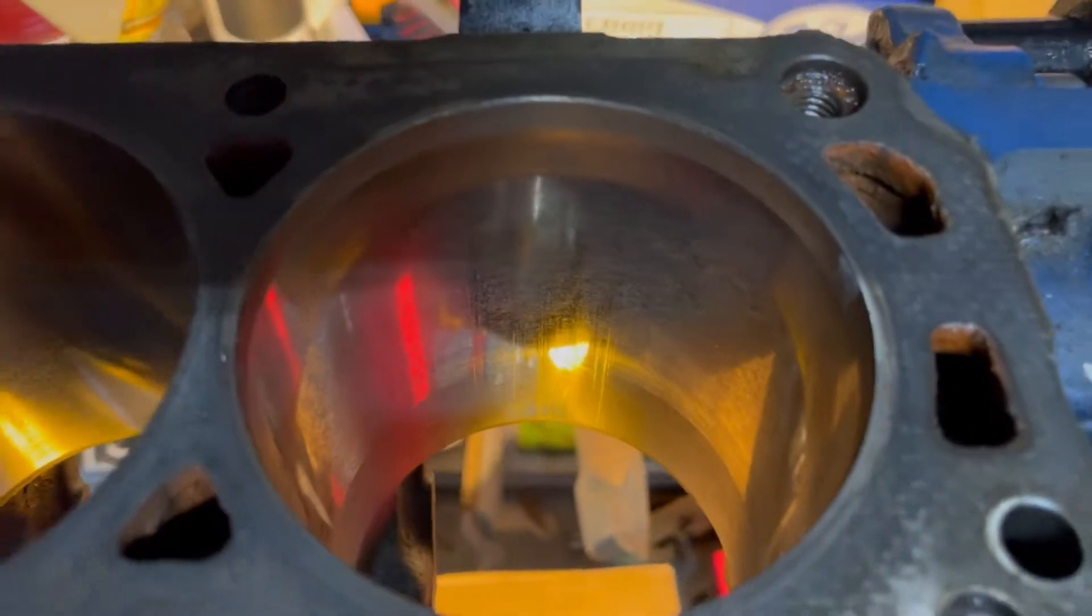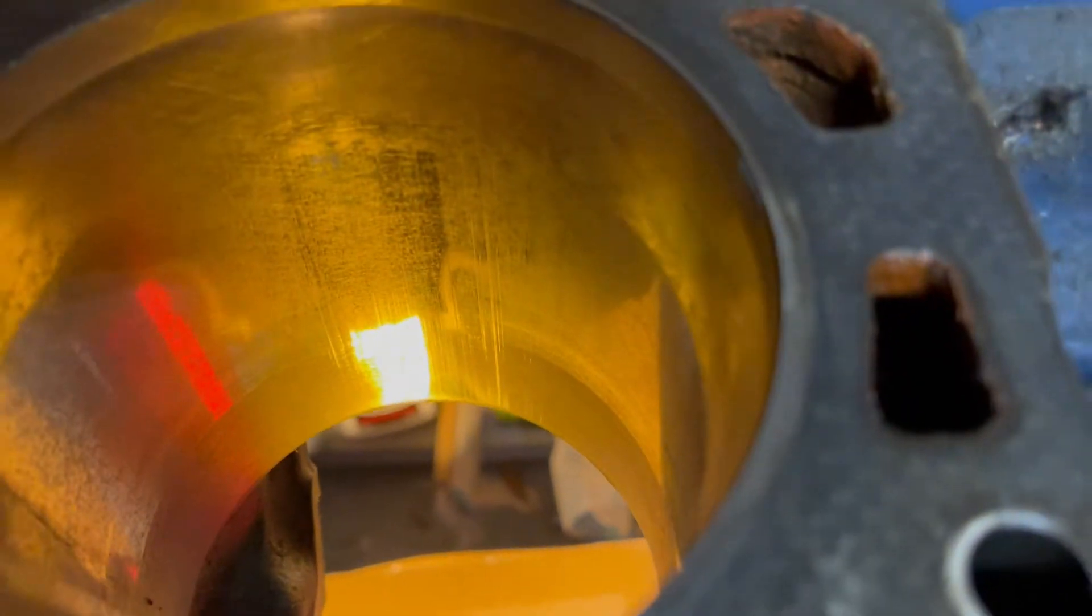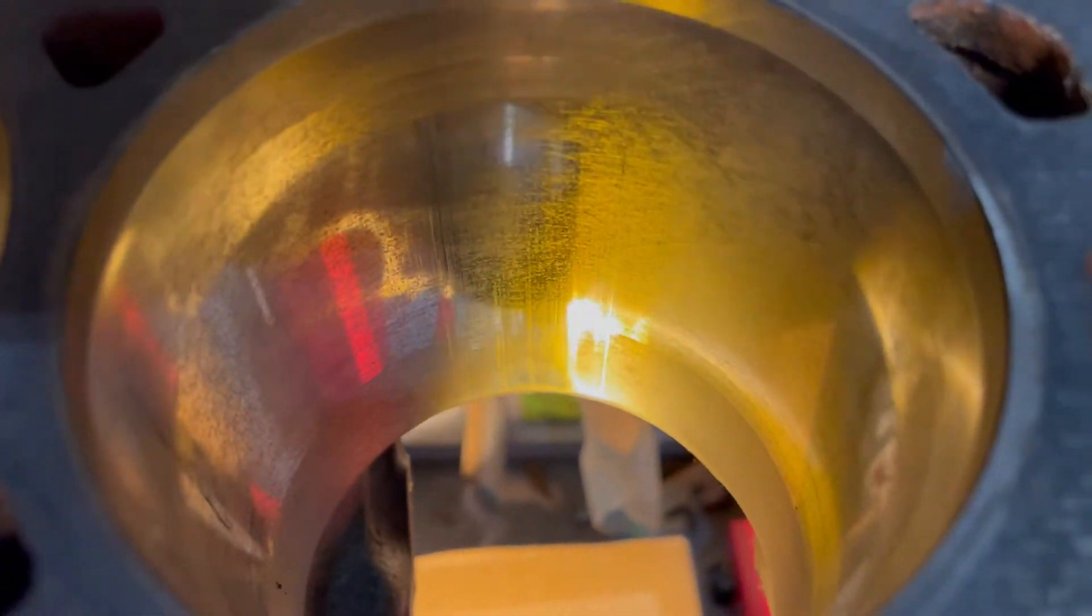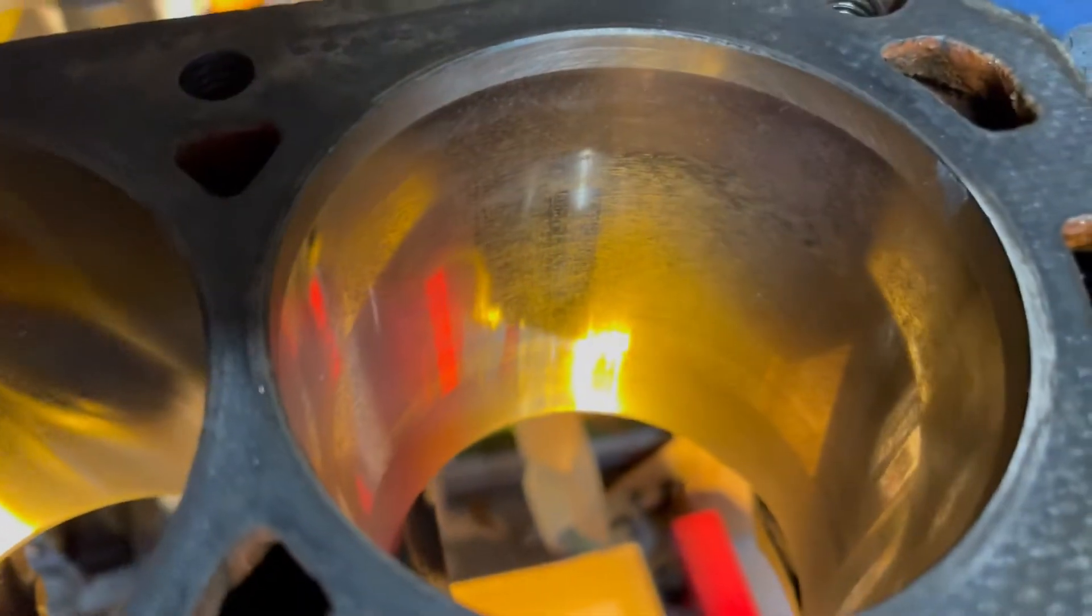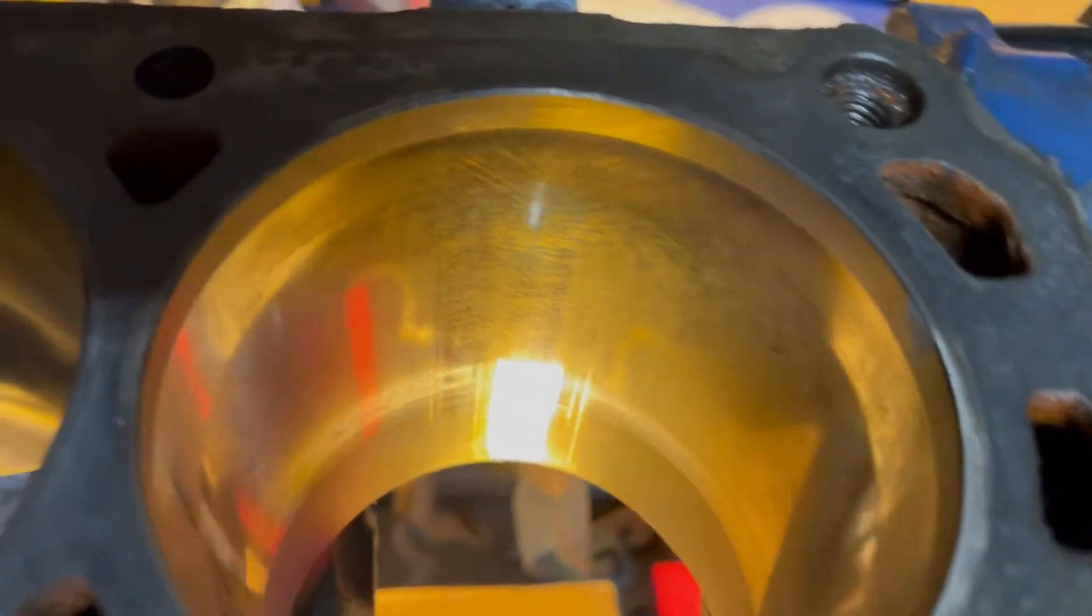So here's what the cylinders look like when I started. So you can see there's some scuffing there. A lot of glazing, especially at the bottom of the cylinder. The cross hatching is barely there. Pretty much non-existent.